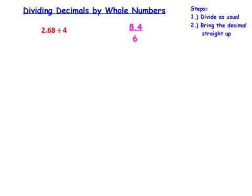Dividing decimals by whole numbers. 2.68 divided by 4. The 2.68 is your dividend and goes in the division box. Your 4 is your divisor. Bring your decimal straight up when you're dealing with whole numbers.